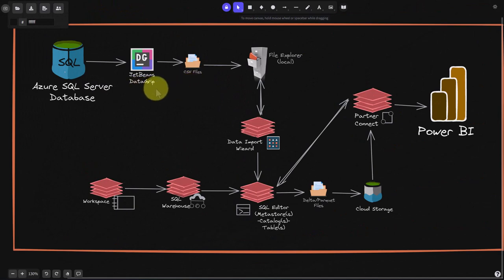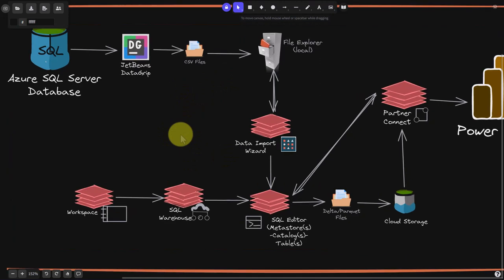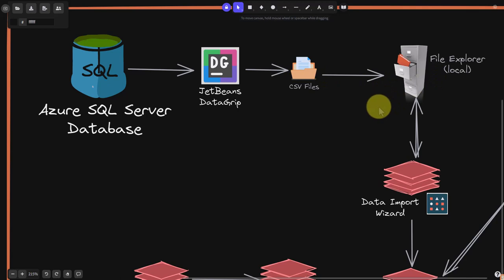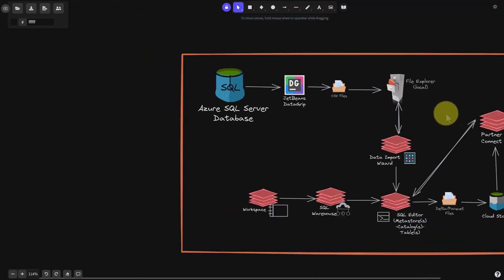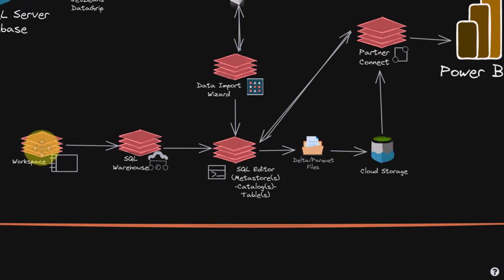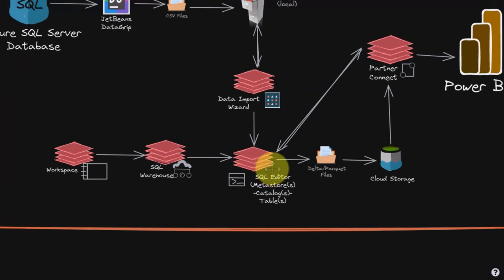Let's go back to our overall diagram. We've covered the top section: we had our SQL Server database, I introduced you to the DataGrip tool, and then we went ahead and exported the CSVs to our File Explorer. Now we're going to go into our Databricks service. I'm going to show you what a workspace is, then what a SQL Warehouse is and how to get there.